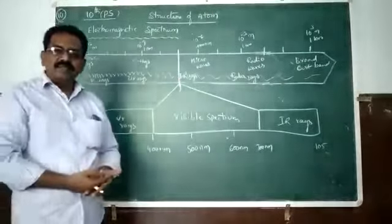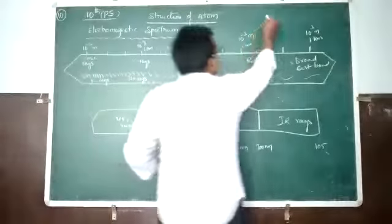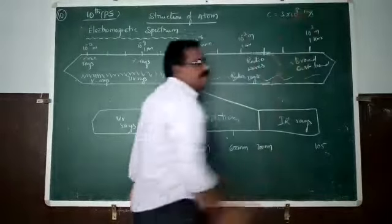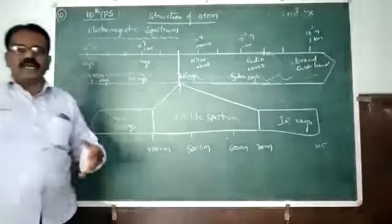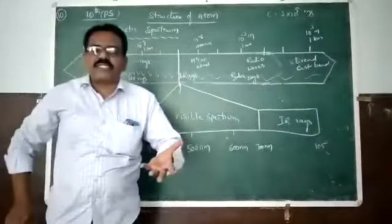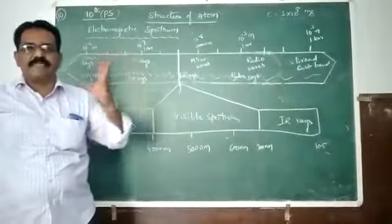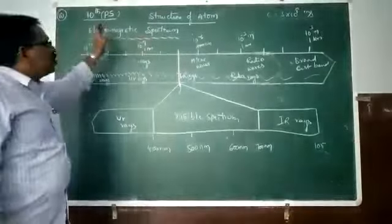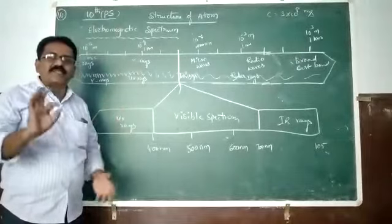Number two is, they travel with the speed of light. That is equal to speed of light. C is equal to 3 into 10 to the power of 8 meters per second. And the third property is, they travel like a transverse wave. So these three are important properties of electromagnetic waves.